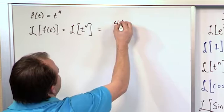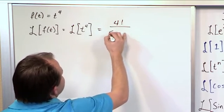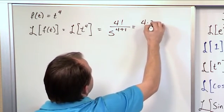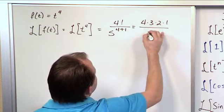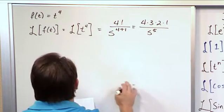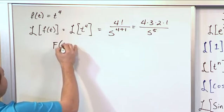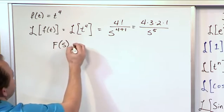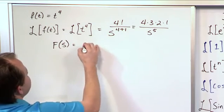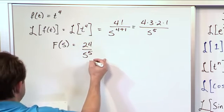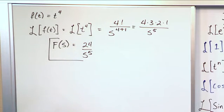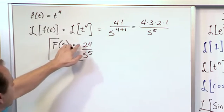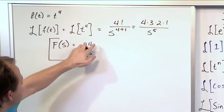So you have 4 factorial over s to the 4 plus 1. And 4 factorial is 4 times 3 times 2 times 1, over s to the fifth power. Capital F, which is a function of s, represents the Laplace Transform of f transformed into the s domain. 4 times 3 is 12, times 2 is 24, over s to the fifth. And that's what you would circle on your test — you have transformed t to the fourth into the s domain, giving you 24 over s to the fifth.